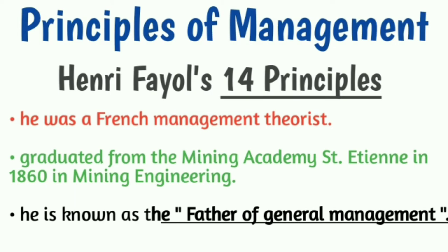So before going to the principles first, let's have a glance at who was Henry Fayol. Henry Fayol was a French management theorist — basically an engineer who graduated from the mining academy in 1860 in mining engineering. He joined a French mining company and rose to the position of its managing director in 1888. Henry was the first one to identify the four functions of management: planning, organizing, directing, and controlling. He developed 14 principles of management which act as a guideline for managers. For his contributions, he is well known as the father of general management.